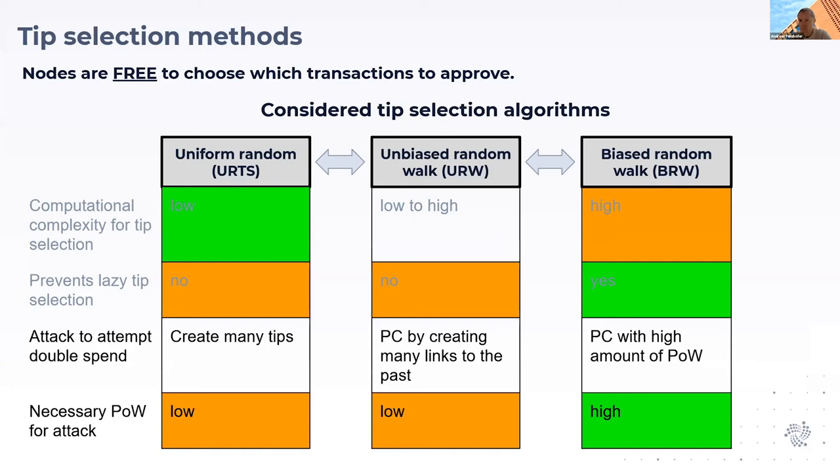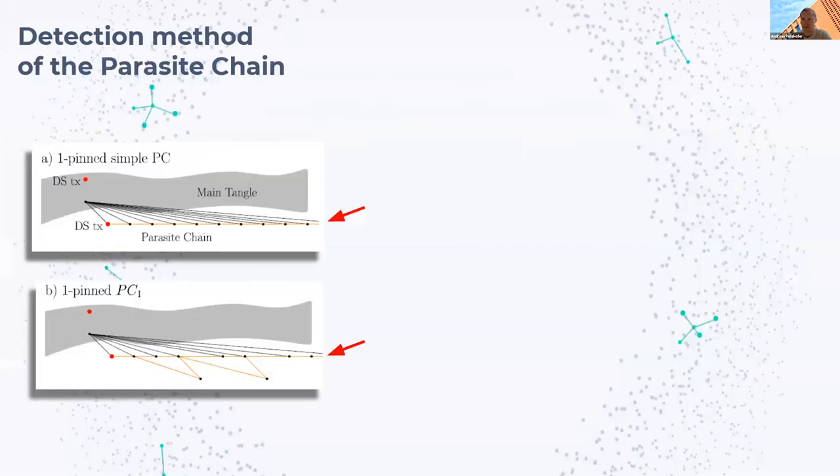Nevertheless, the attacker could have a chance to perform this attack, and what we want to do is identify this parasite chain and then take countermeasures to prevent it from taking over the main Tangle.